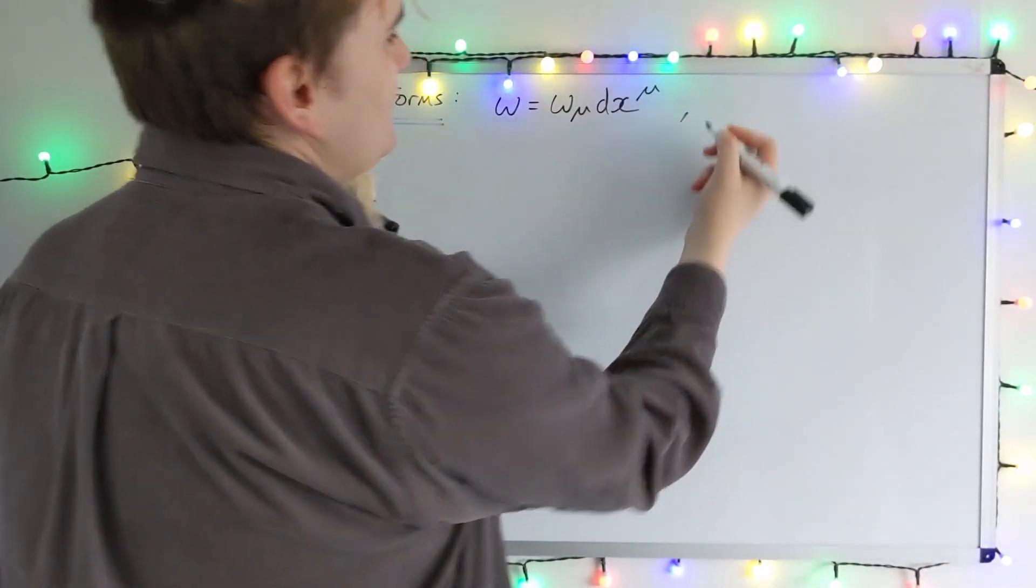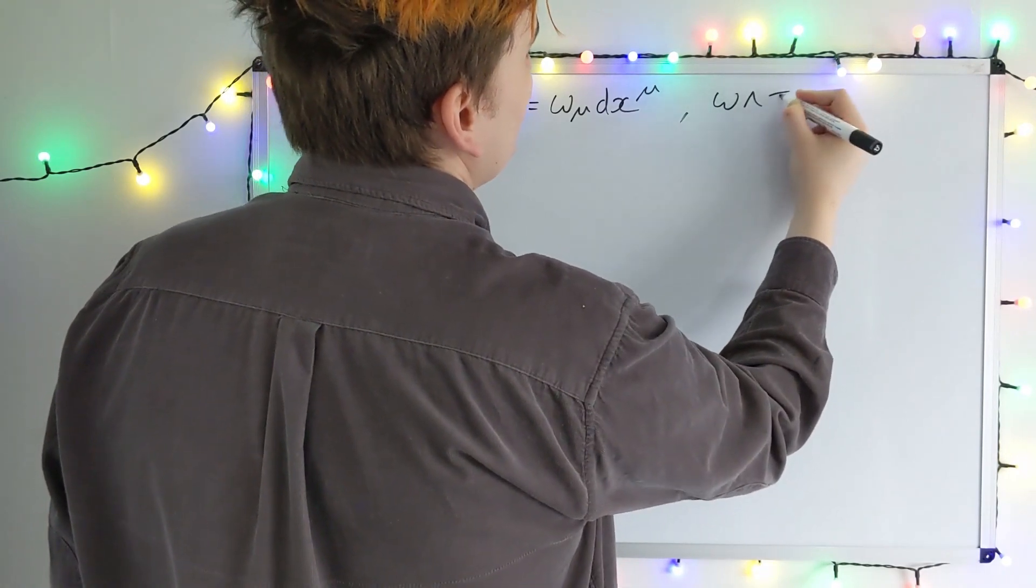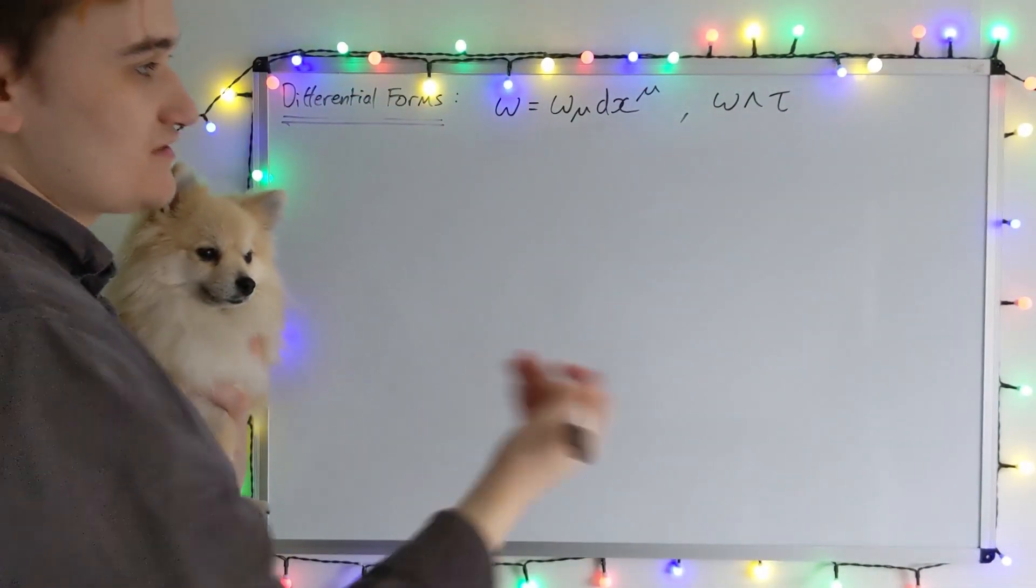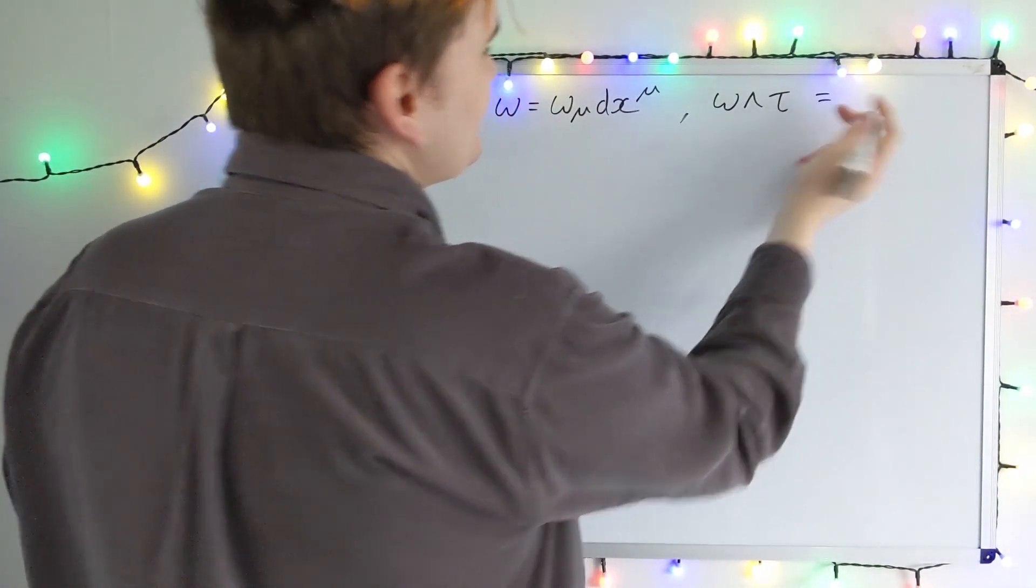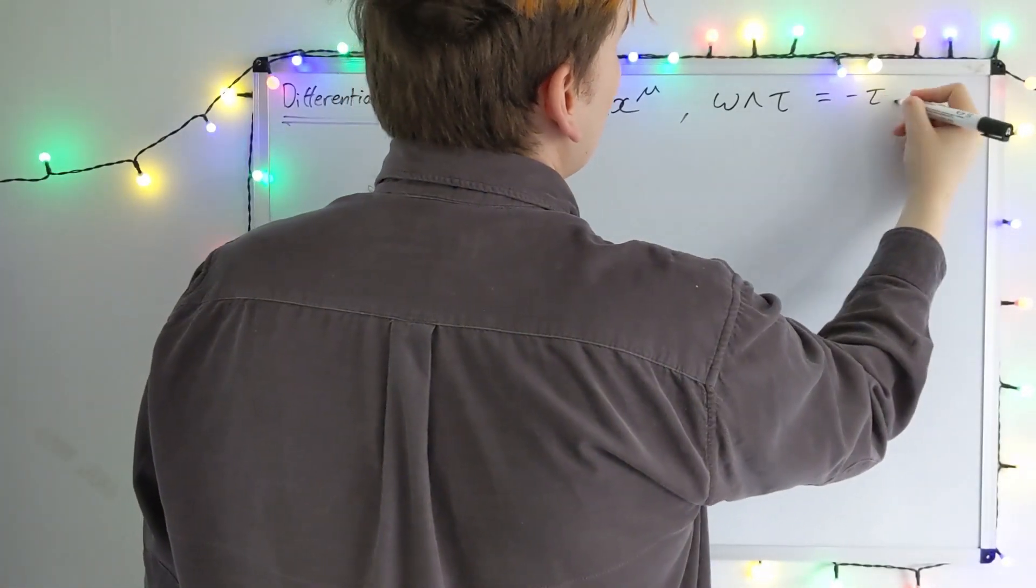And then I introduced to you the notion of the wedge product, which on two one-forms is going to produce a two-form, but we have to be really careful to respect the anti-symmetry of the wedge product.